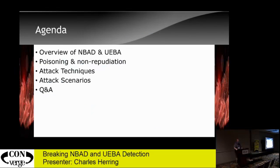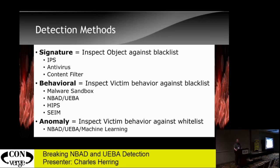What we're going to hit on today is how NBAD works, how UBA works — very quickly — the relationship between data poisoning, baseline poisoning, non-repudiation, and how to protect against those things. We're going to go into some specific attack scenarios and tactics, and then we'll open up to Q&A. This deck is up on Twitter at Charles Herring, or charlesherring.com will take you to my LinkedIn page where you can download the deck. It has the code in it for the exploits.